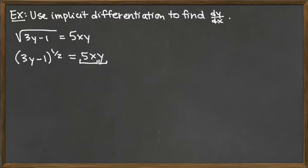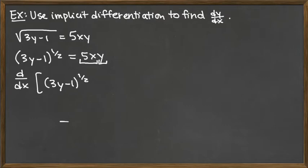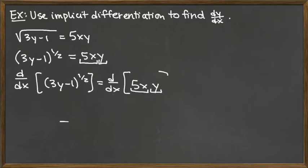They both involve x, so we're ready now to take the derivative with respect to x of both sides. So d/dx of — we've got the 3y minus 1 to the 1/2 — is equal to the d/dx of the product of 5x times y. And I'm going to indicate that product rule right there.